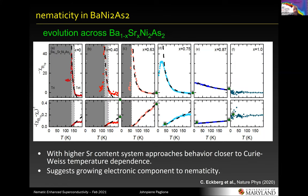The nematic susceptibility actually starts to grow before the order onsets, and then peaks — it may look like Curie-Weiss behavior but it's somewhat different. Showing the progression as a function of strontium substitution: as you replace barium with strontium, the triclinic structural order is suppressed, and around 70% strontium there's a cutoff and no triclinic order. Along this axis, the nematic susceptibility's growth gets suppressed in temperature and magnitude until at x=1 strontium it's completely flat.